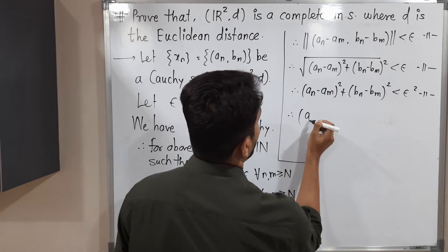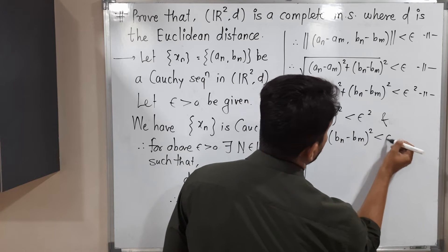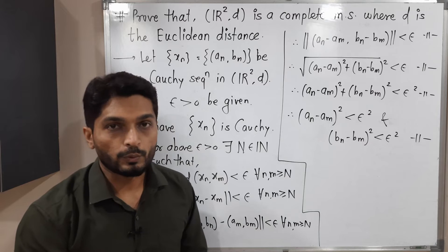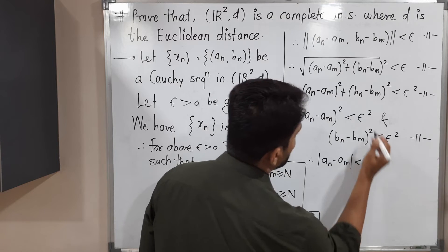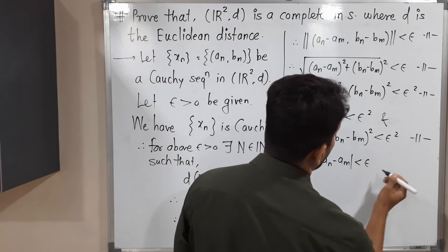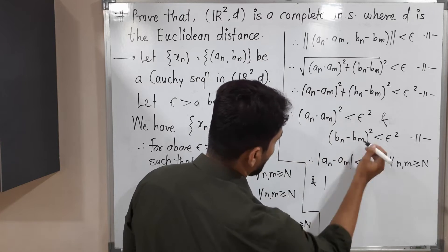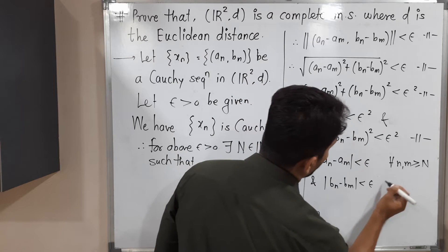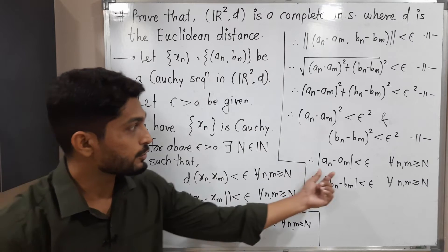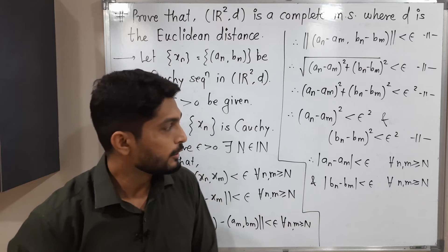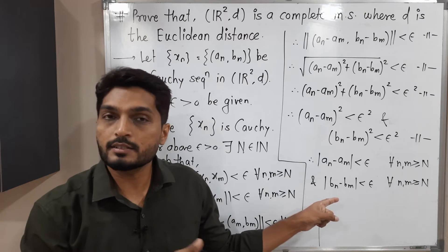Therefore (aₙ − aₘ)² < ε² and (bₙ − bₘ)² < ε². Taking positive square roots: |aₙ − aₘ| < ε and |bₙ − bₘ| < ε for all n, m ≥ N. But this is exactly the definition of a Cauchy sequence in ℝ with the usual distance. So aₙ is a Cauchy sequence in ℝ and bₙ is also a Cauchy sequence in ℝ.